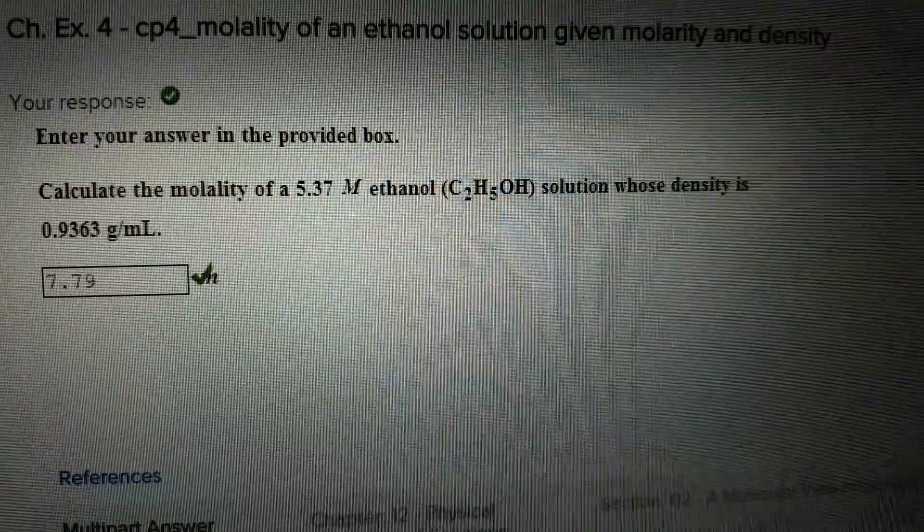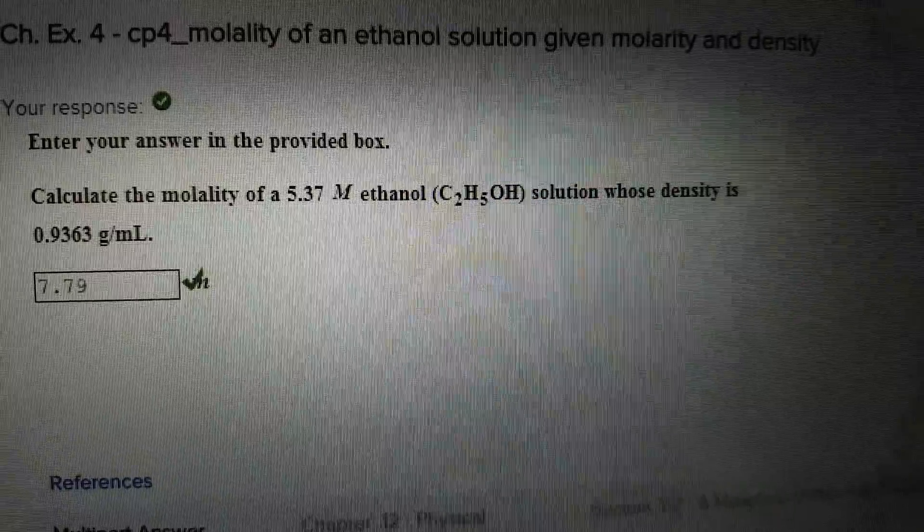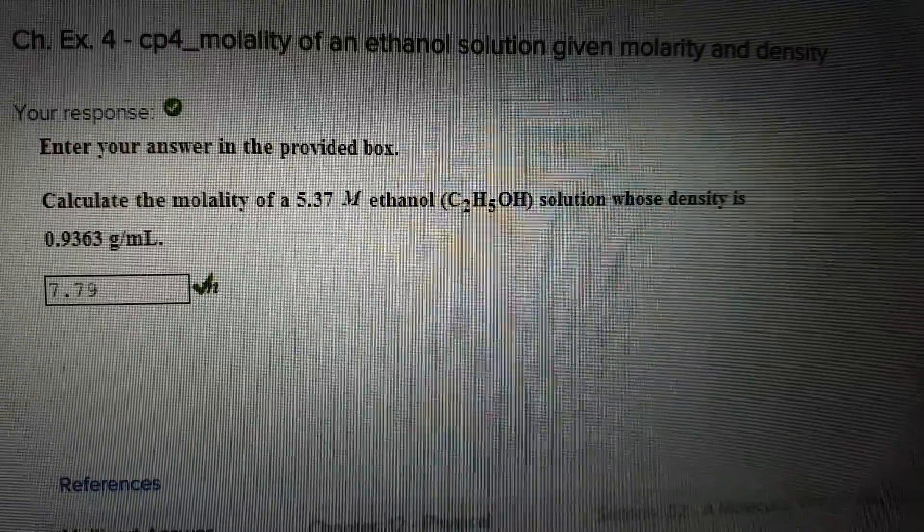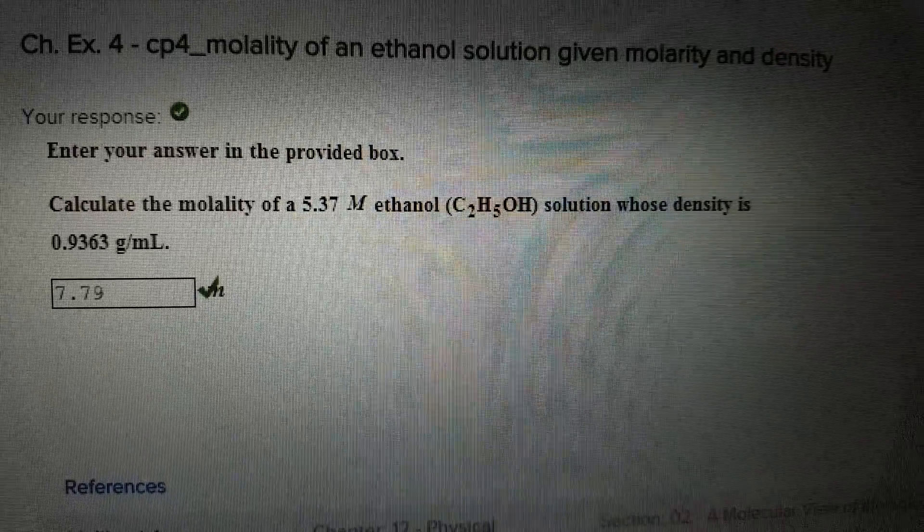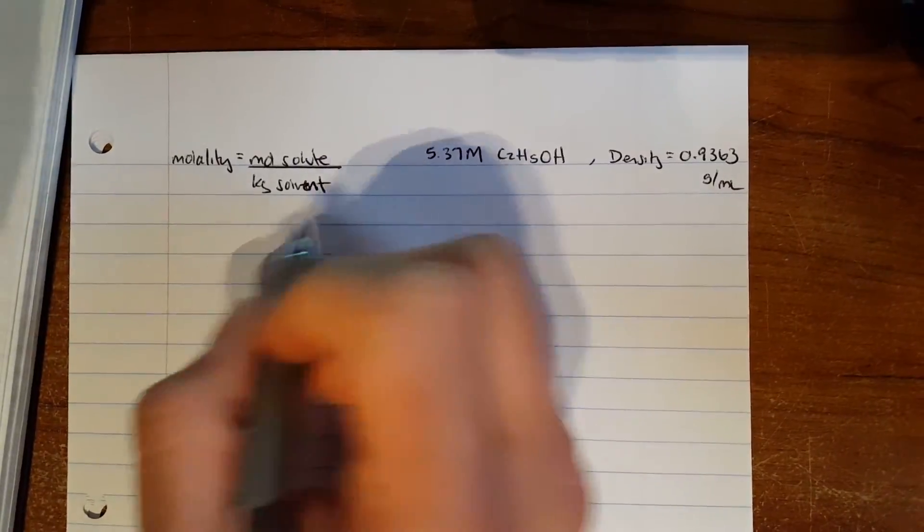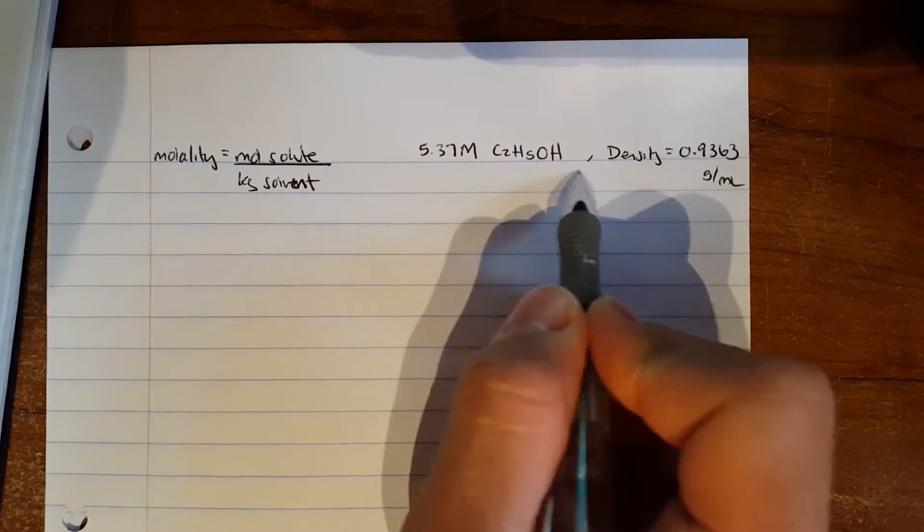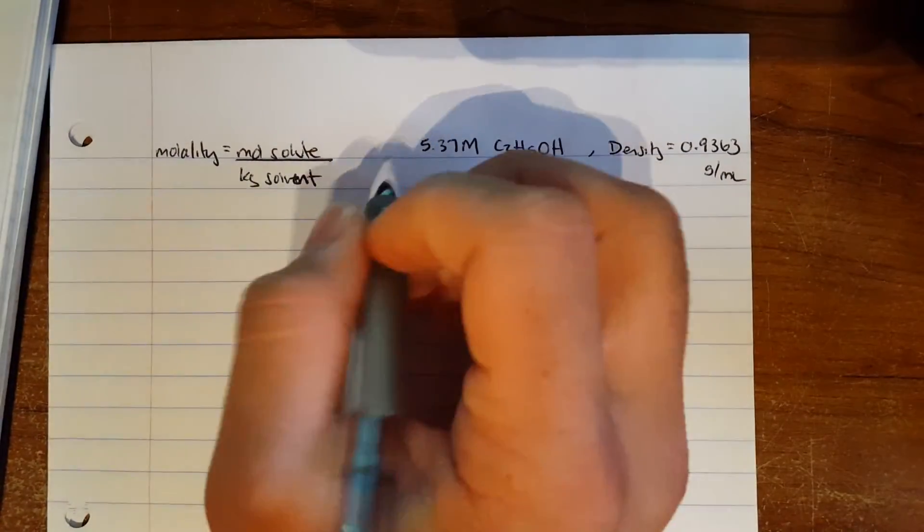For this question, we are asked to calculate the molality of a 5.37 molar ethanol (C2H5OH) solution whose density is 0.9363 g/mL. First, we have our given, our knowns.